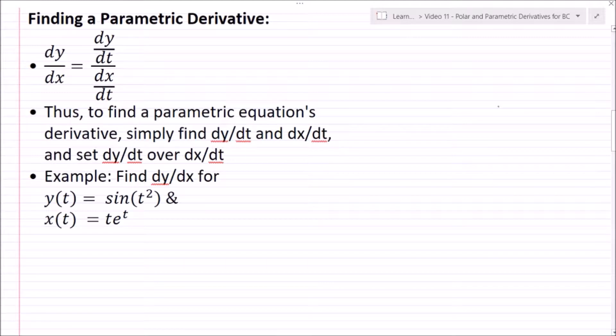All right, so let's talk about finding a parametric derivative. So here, our dy/dx equals dy/dt over dx/dt, where we'd simply cancel out these dt's and be left with dy over dx. So to find a parametric equation's derivative, simply find dy/dt and dx/dt, and then set dy/dt over dx/dt.